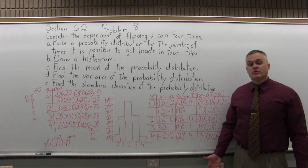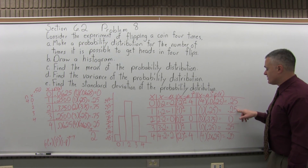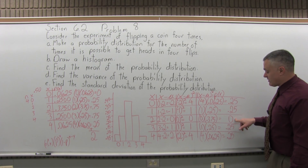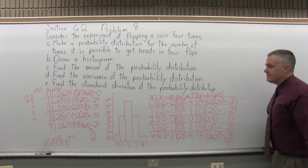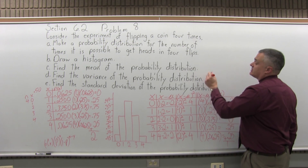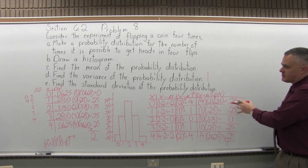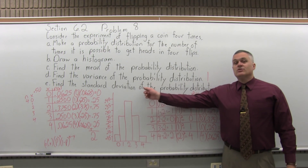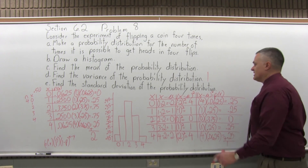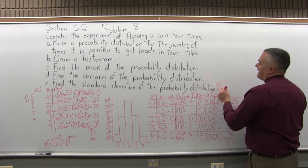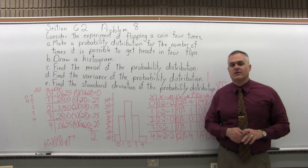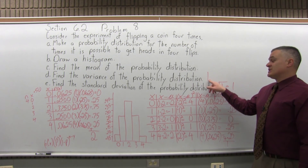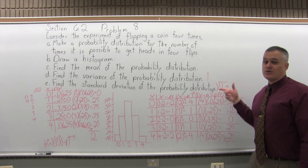For the variance, I add up all the values in the last column: 0.25 plus 0.25 is 0.50. Plus 0 is still 0.50. Plus 0.25 is 0.75. Plus 0.25 comes out to 1. So the variance is 1.0. And the standard deviation of the probability distribution is the square root of the variance. Fortunately for this one, the variance is a very easy number to take the square root of — the square root of 1 is 1, because 1 times 1 is 1.